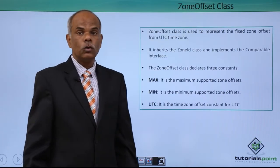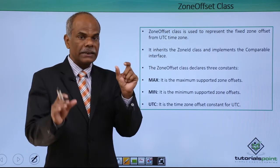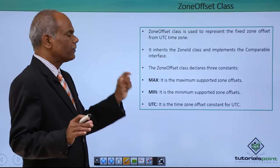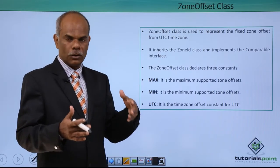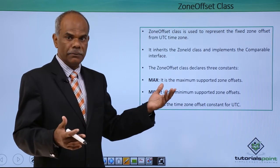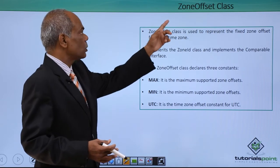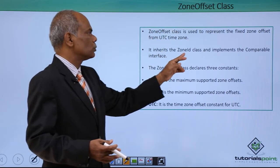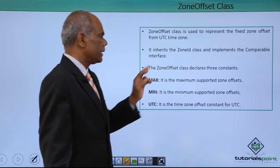Then there is a zone offset class. It is used to represent the fixed rate time zone offset between the current time zone or your time zone and the GMT or UTC. As you will expect, this offset class inherits the ZoneID class and it also implements the comparable interface.